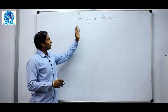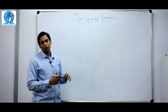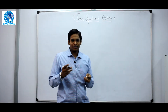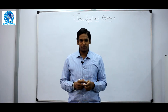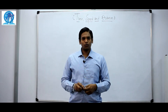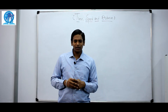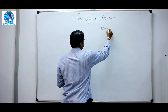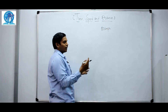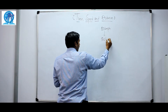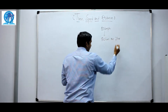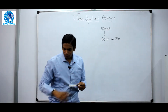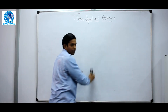Today we'll learn about time, speed, and distance. You already know what speed is — at night you travel at speeds like 80 km per hour or 60 km per hour. If somebody says they are traveling at 80 km per hour, that means they are covering nearly 80 km in one hour. So that is the basic meaning of 80 km per hour. Let us understand some basic things in time, speed, and distance.